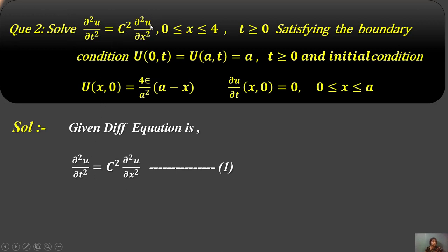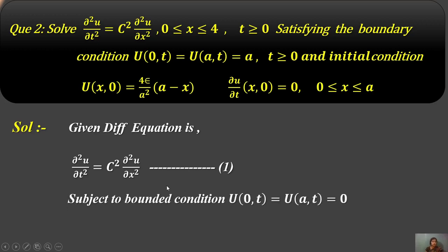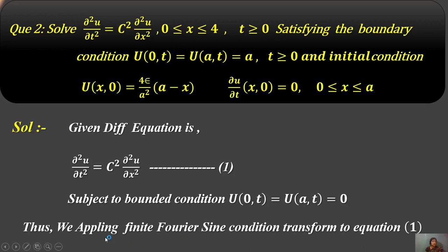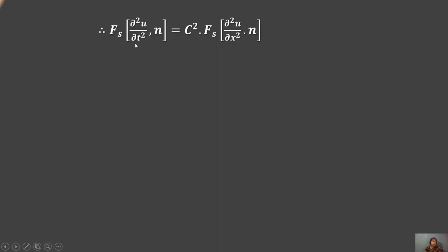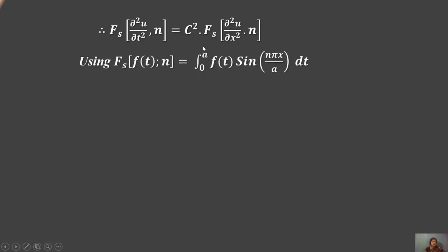The given differential equation is ∂²u/∂t² = c²·∂²u/∂x². The boundary condition is u(0, t) = u(a, t) = 0. We apply the finite Fourier sine transform to the equation. The transform gives: Fs{∂²u/∂t²}(n) = c²·Fs{∂²u/∂x²}(n).